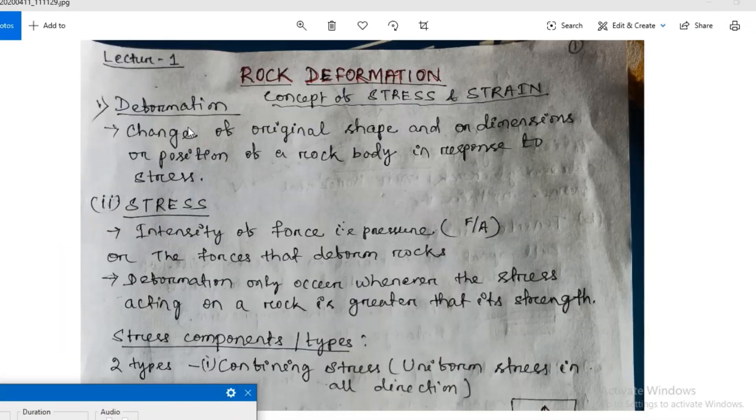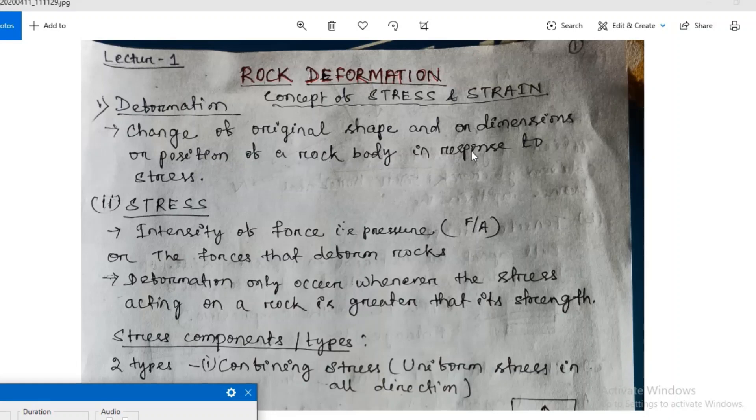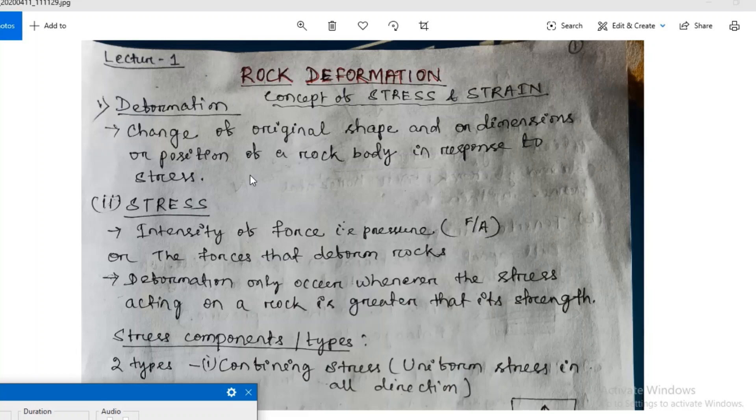What is deformation? Deformation is change of original shape or dimensions or position of a rock body in response to stress. If you have a stress, that is force, on a rock mass, then it changes its original shape or position. Then it is called deformation.